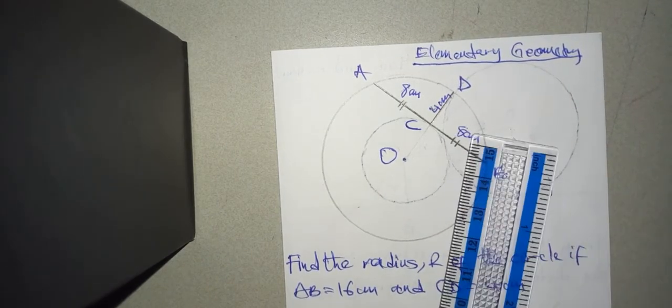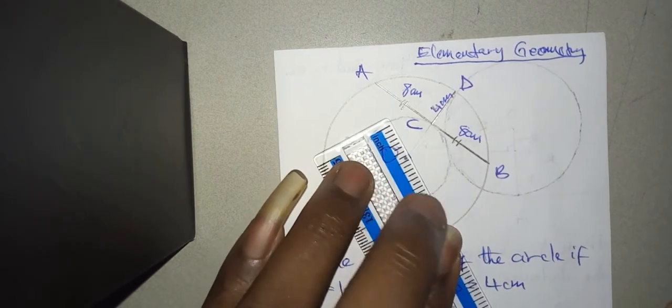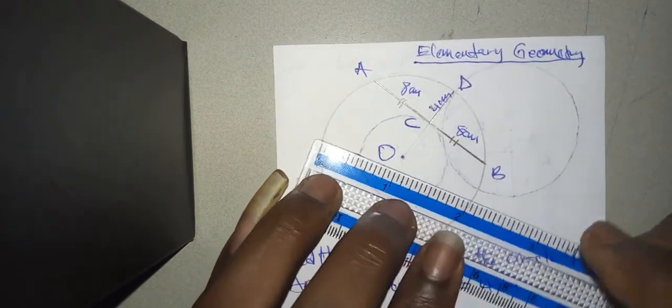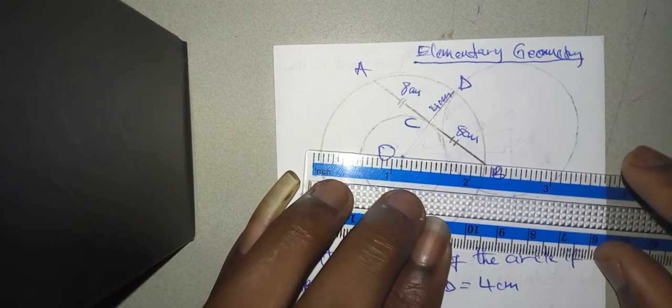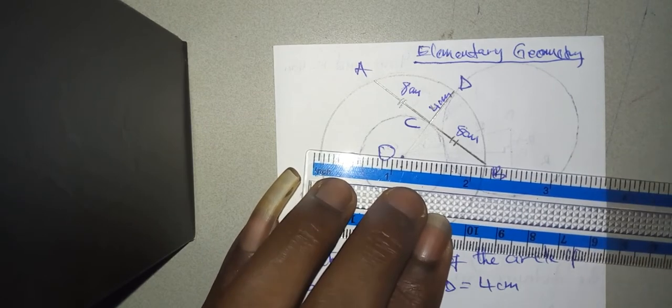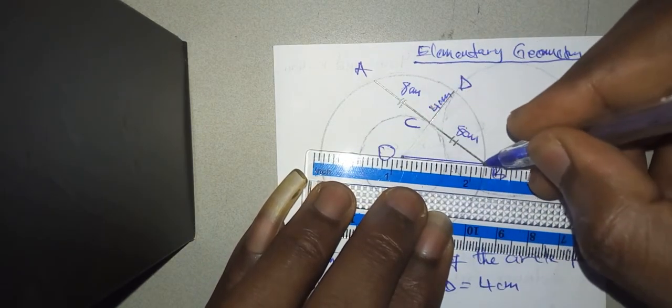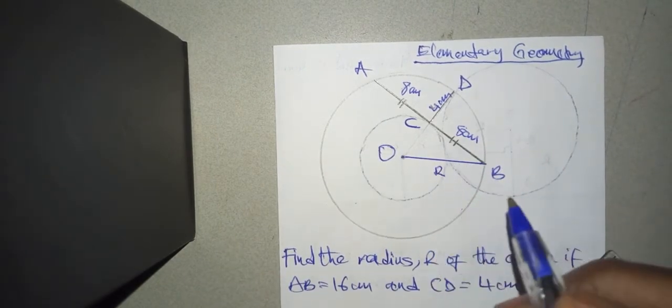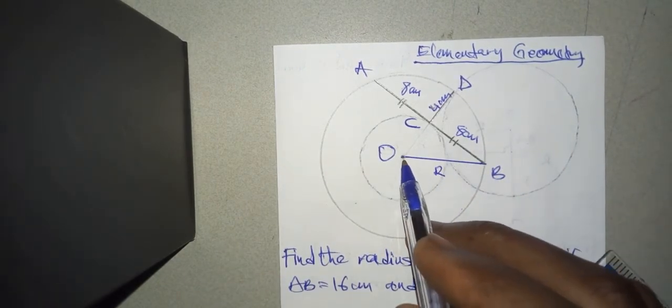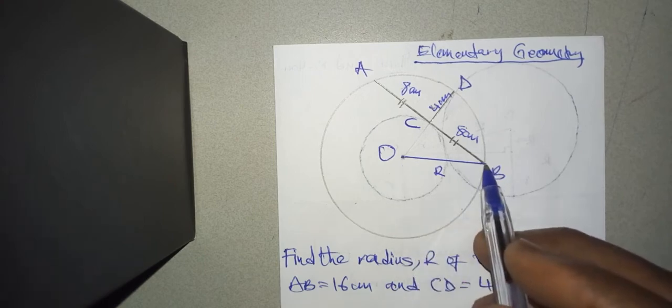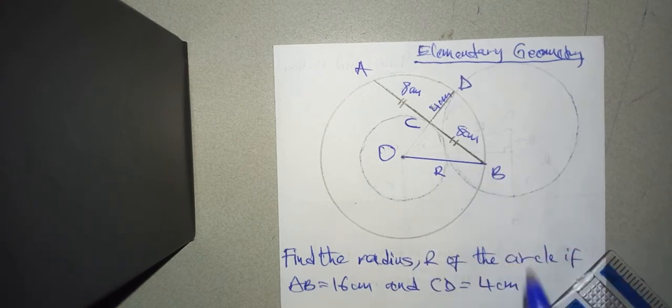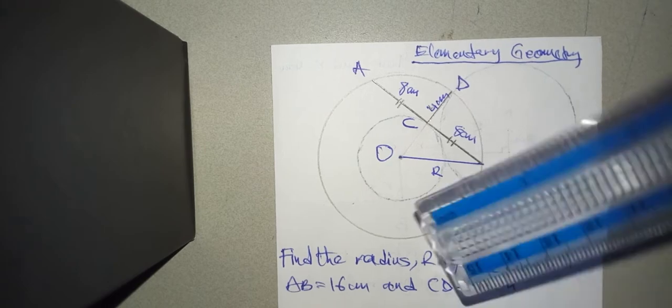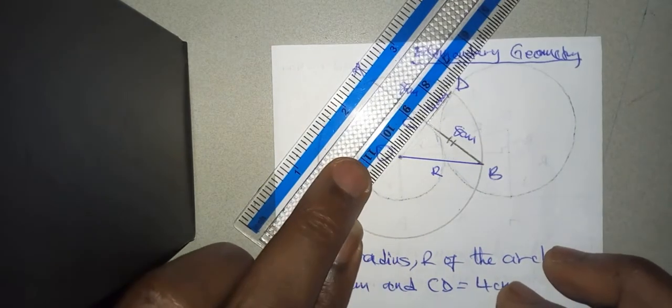Now, I don't want to redraw the circle again, so I can do this and I will say this is R because it is a line drawn from the center of the circle to hit a point on the circumference, which is a radius. Then I can also connect C and O.